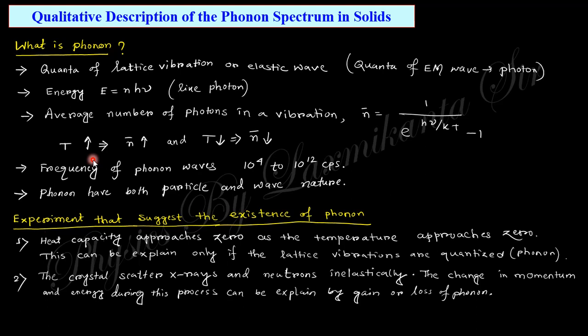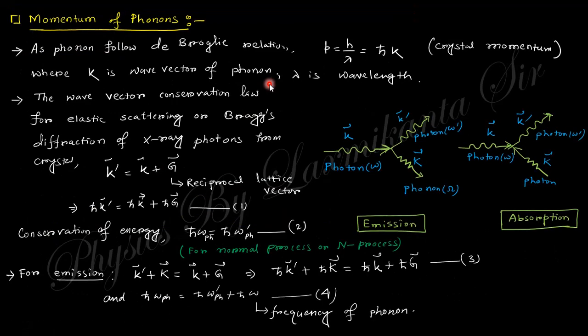When the temperature is zero, the heat capacity is also zero. This can only be explained when lattice vibrations are quantized — that is, when we apply the phonon concept. This phenomenon — heat capacity going to zero as absolute temperature goes to zero — is explained by the phonon concept. Second, when crystals scatter X-rays inelastically, the change in momentum and energy during the process can be explained by the gain or loss of phonons. These two experimental results prove the existence of phonons as quanta of lattice vibration.